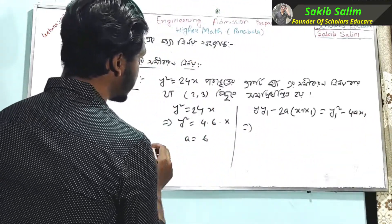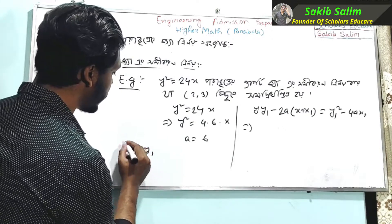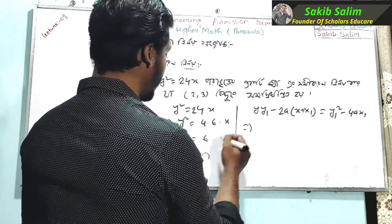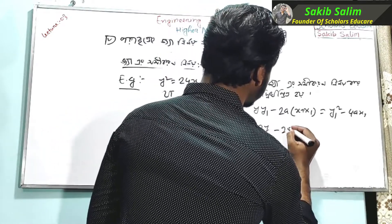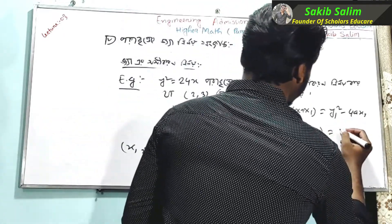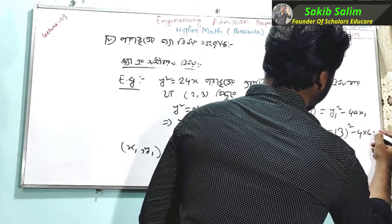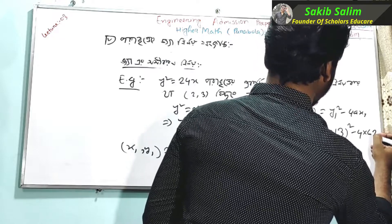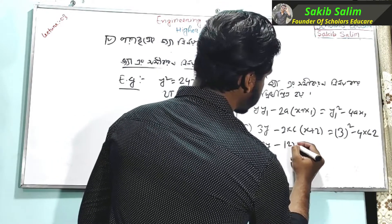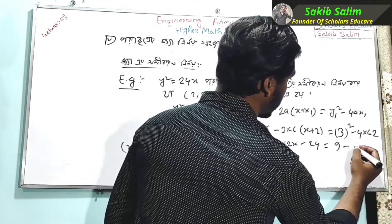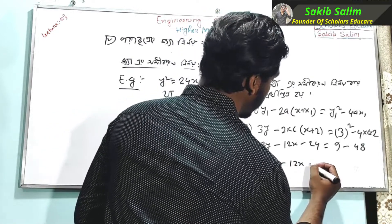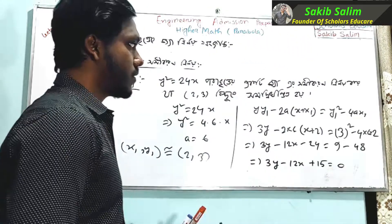That is x1 with y1 value 2 and 3. That is y1 value equal to 3. So y minus 2 into 6, times x plus 2 is equal to 3 squared minus 4 into 6 into 2. Working this out: 3y minus 12x minus 24 equals 9 minus 48, giving 3y minus 12x plus 15 equals 0.